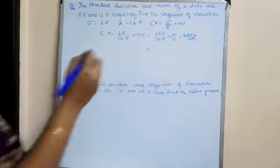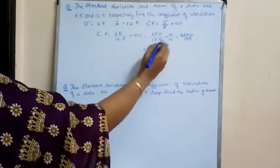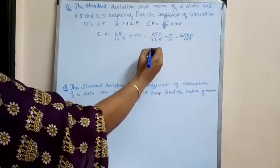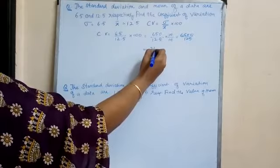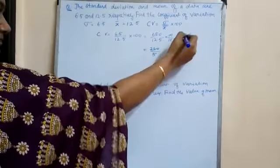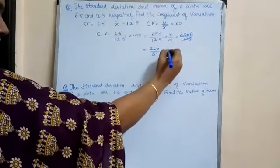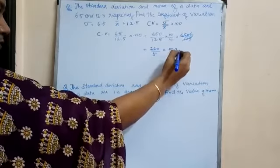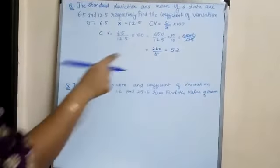When we cancel it by 25 we get 260 divided by 5. So your answer will be 52. That will be your CV.